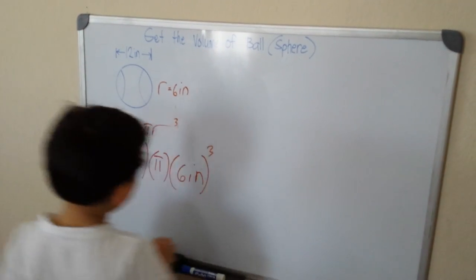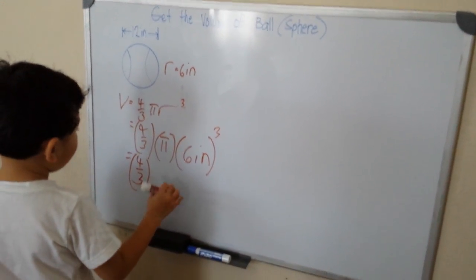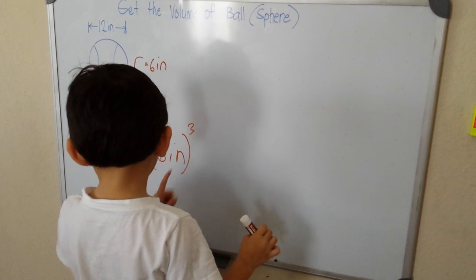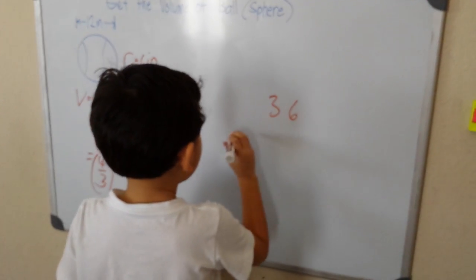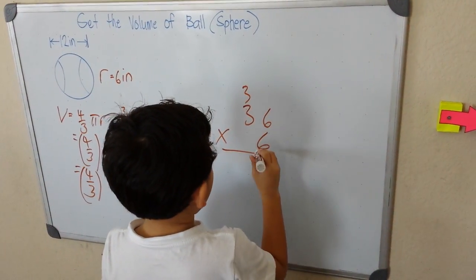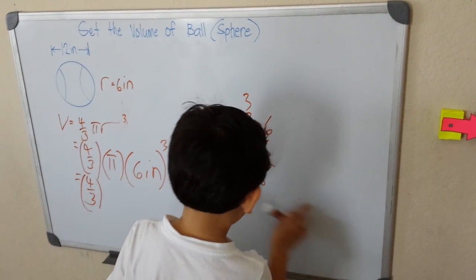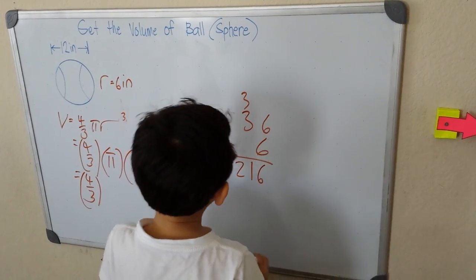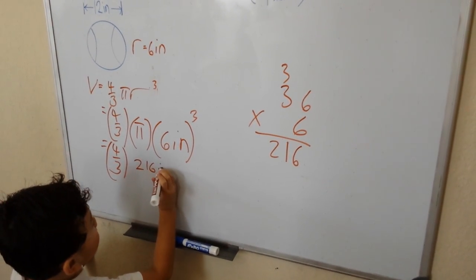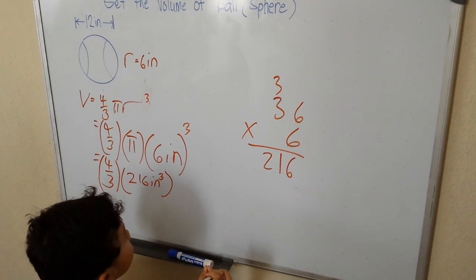Now let's move pi to the end and simplify the exponents. So four over three, and then we simplify the exponents: 6 times 6 times 6. 6 times 6 is 36, carry the 3. 6 times 3 is 18 plus 3 is 21. So that's 216, 216 inches cubed.